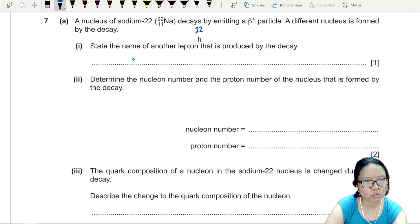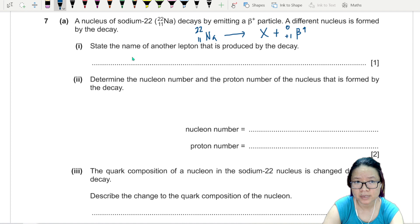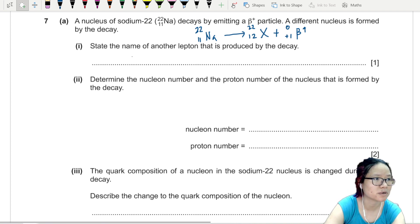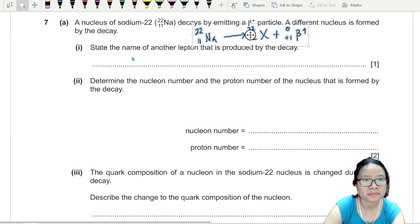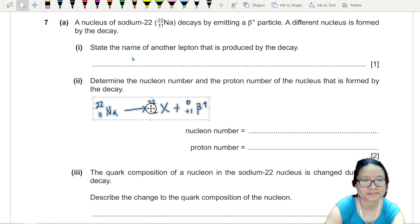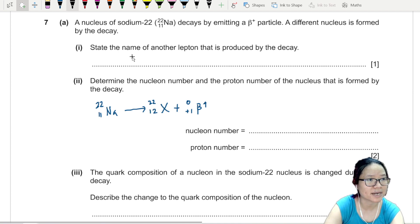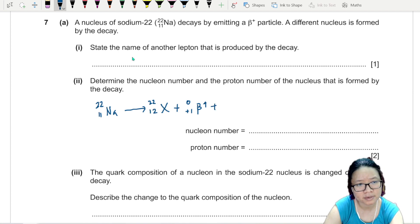22, 11 Na. You want a beta plus. I don't know what this particle is. I'm going to say 0 plus 1. Meaning this will be 22 and 12. In fact, I sort of answered part 2 already. Maybe I'll write this one there. But there's a third particle, you remember? 0, 0, something. Let's think a bit.